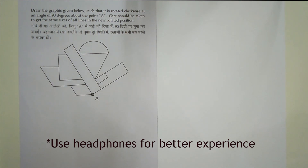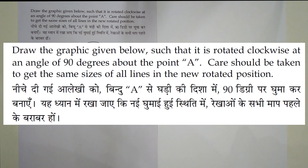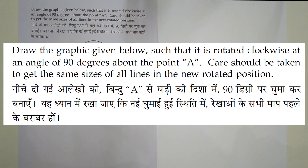Hello guys, this is Pawan Kumar and you are watching RGB Studies. This video is about the drawing section which you will see in different architecture entrance exams like NATA and JAE Paper 2. So let's start. The question is: draw the graphic given below so that it is rotated clockwise at an angle of 90 degrees about the point A, and care should be taken to get the same sizes of all the lines in the new position.